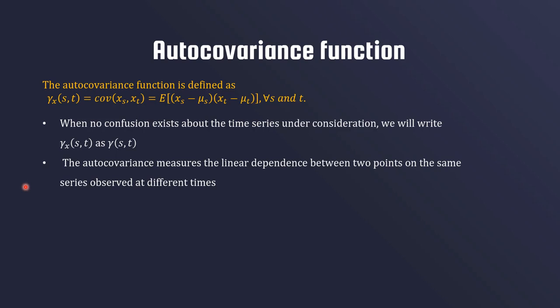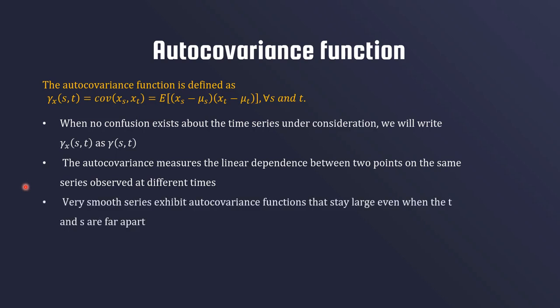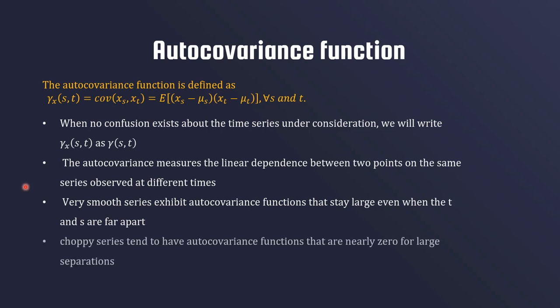Smooth series exhibit auto covariance functions that stay large even when the time points t and s are far apart. Remember the moving average series from earlier videos — the larger the order of the moving average, the smoother the graph. Choppy series tend to have auto covariance functions that are nearly zero for large separations. The extreme case is white noise, where everything is uncorrelated.